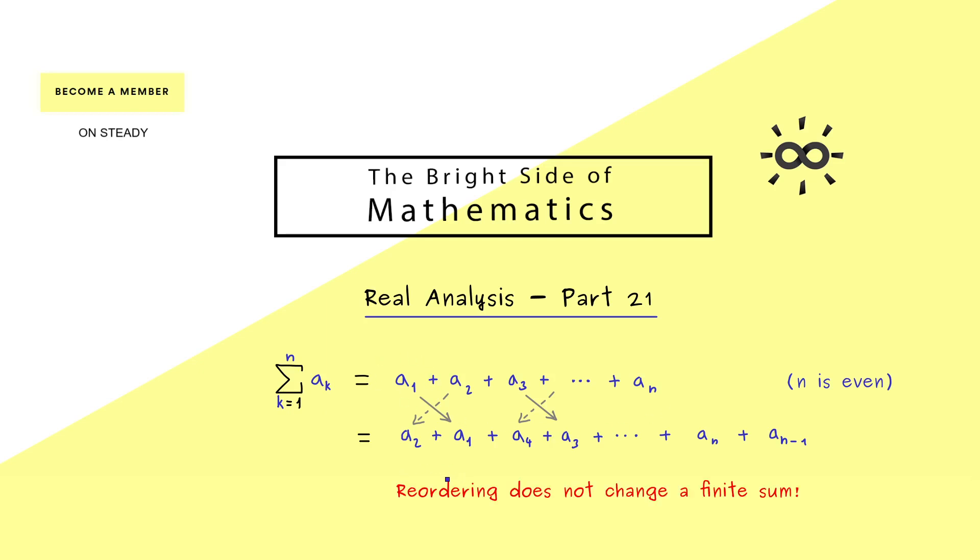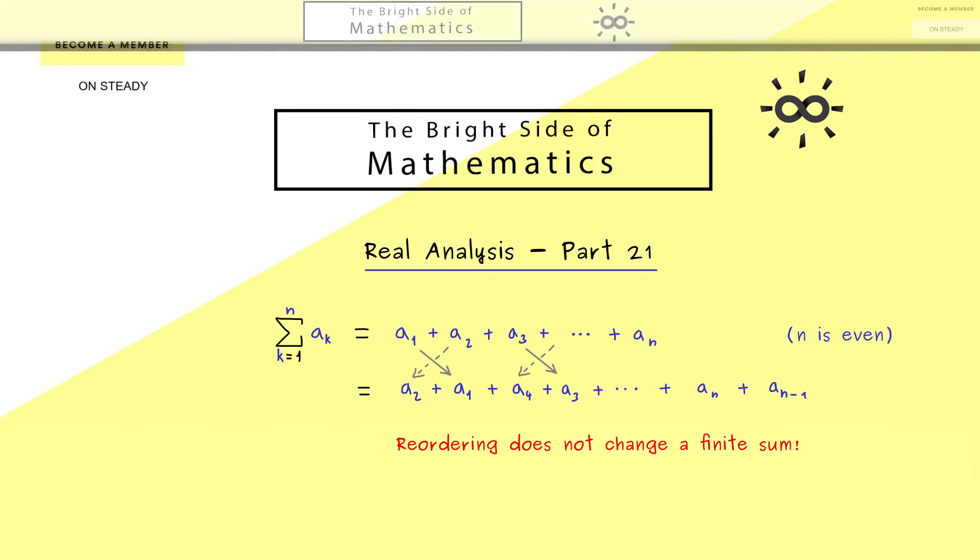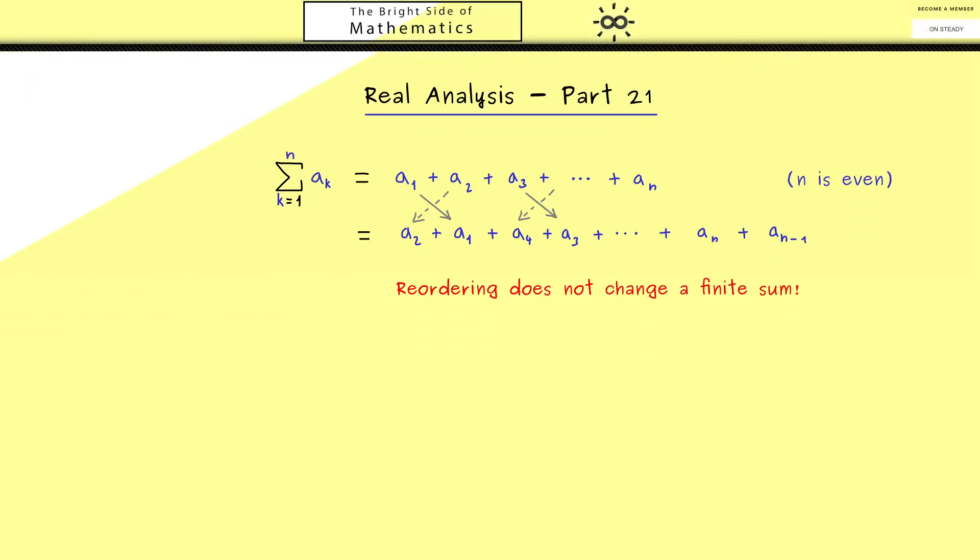However, an infinite sum, a series, is different from a finite sum. A reordering can indeed change the value. To see this, let's look at an example. Take this series where we add plus and minus 1. We've shown it's not convergent, but the sequence of partial sums has two different accumulation values, 0 and 1.